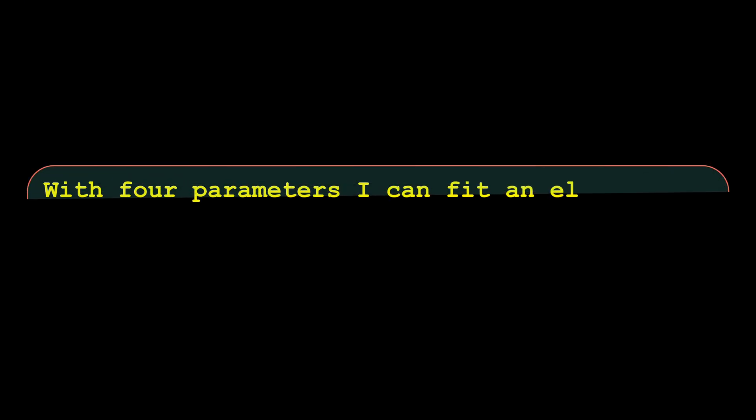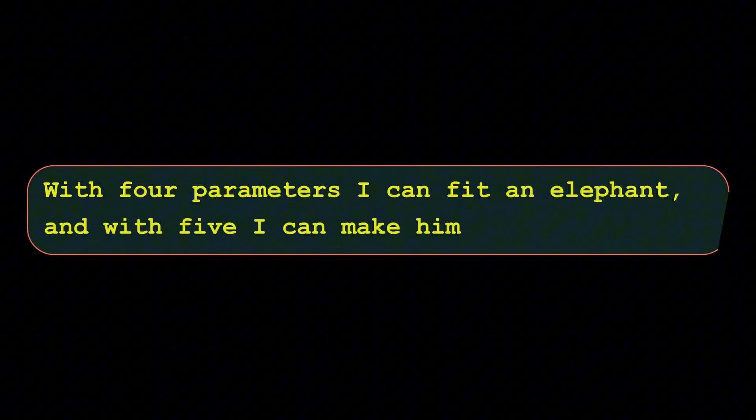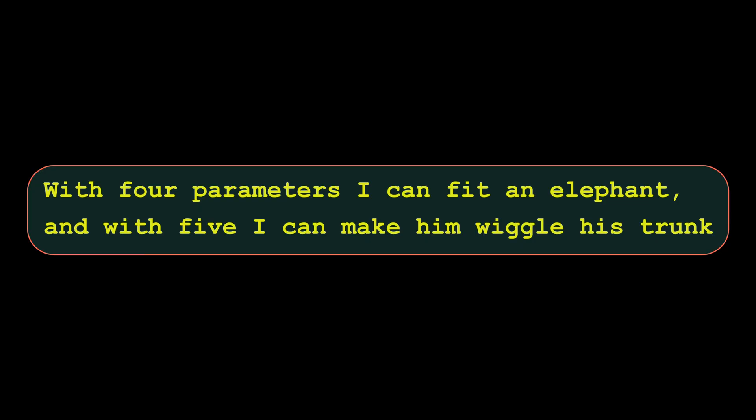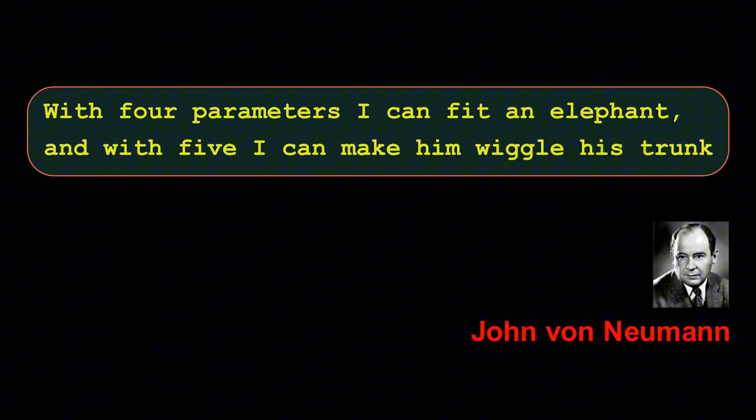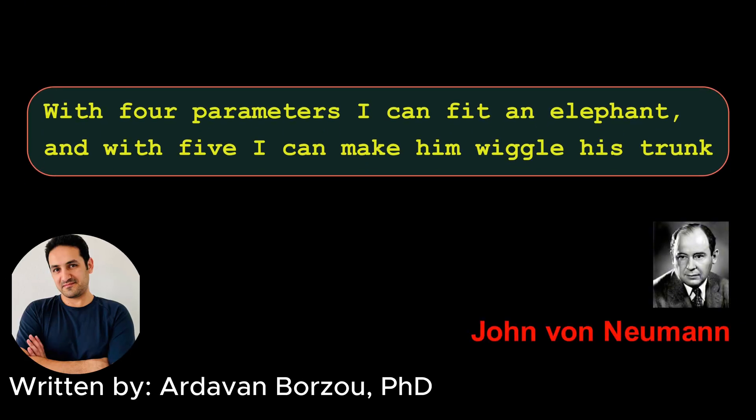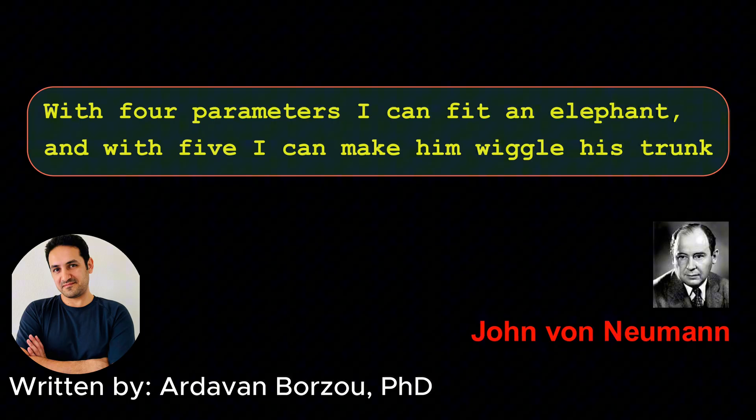With four parameters, I can fit an elephant, and with five, I can make him wiggle his trunk. This remark by John von Neumann beautifully captures the essence of a serious problem in both physics and machine learning, overfitting.